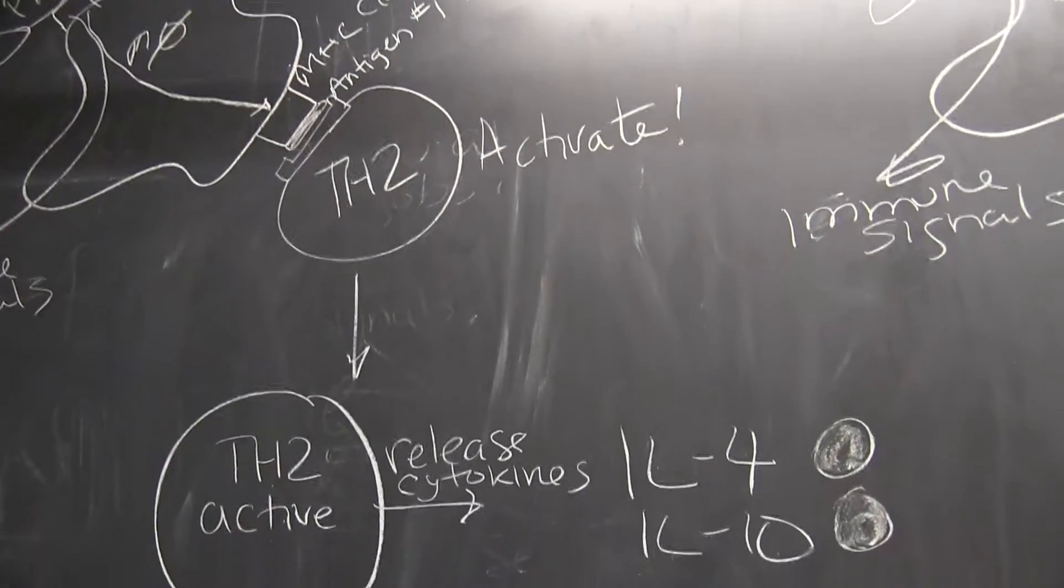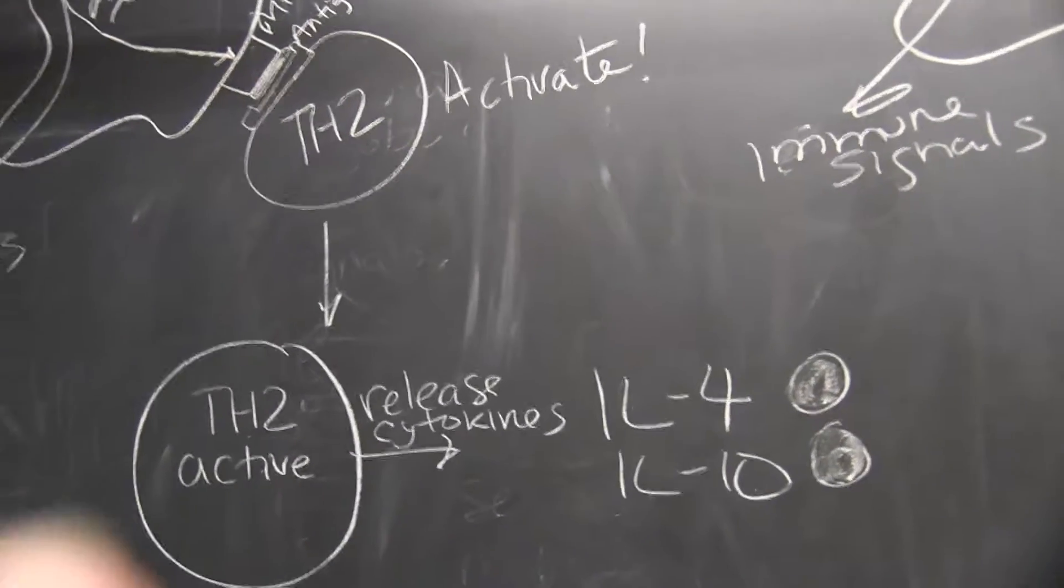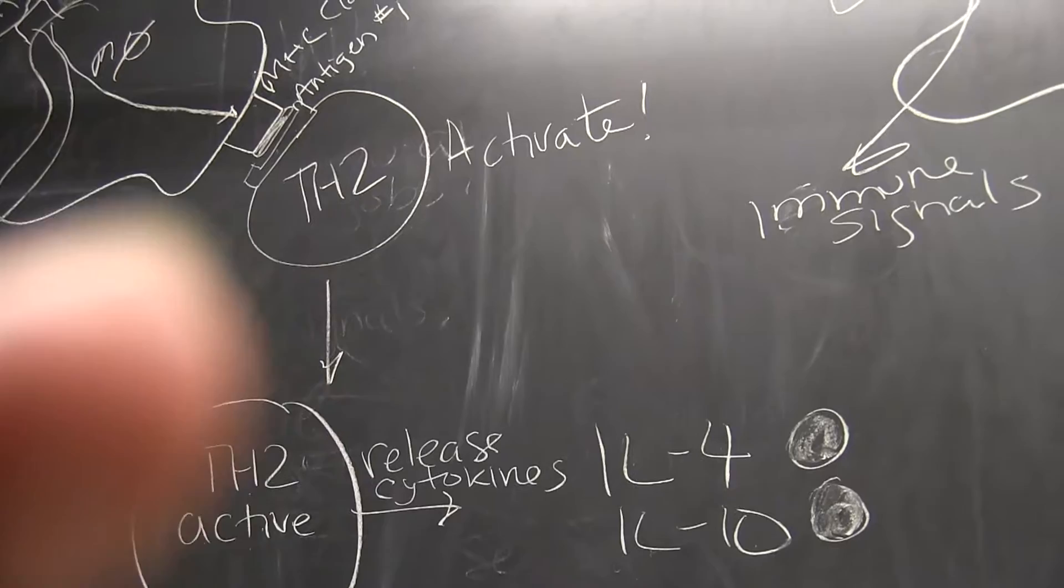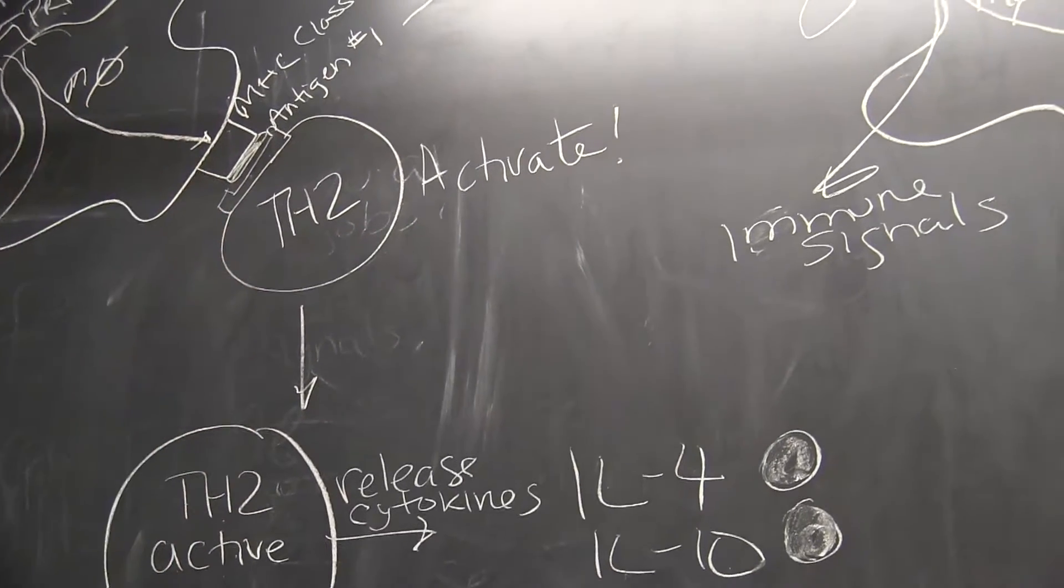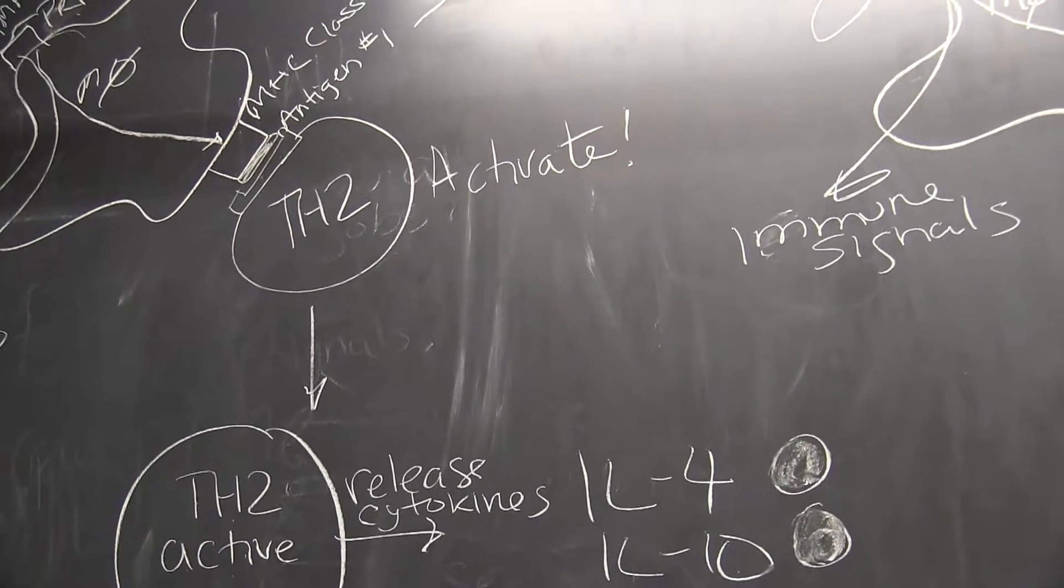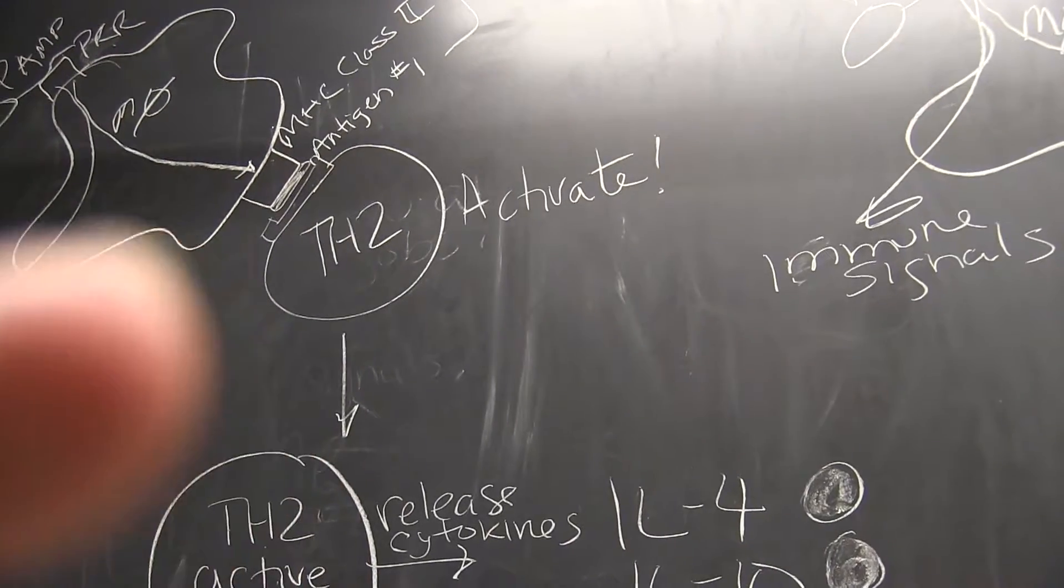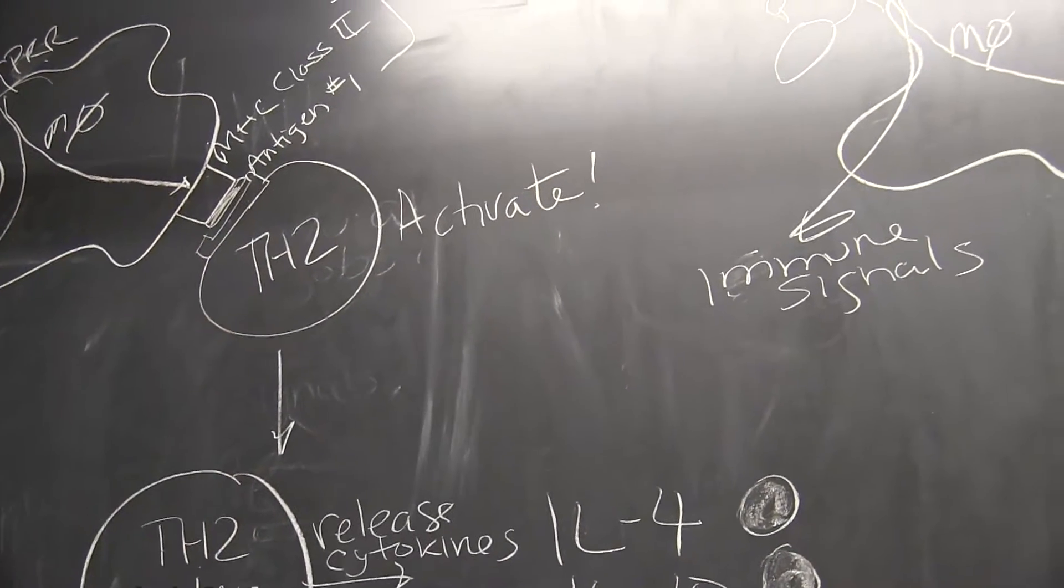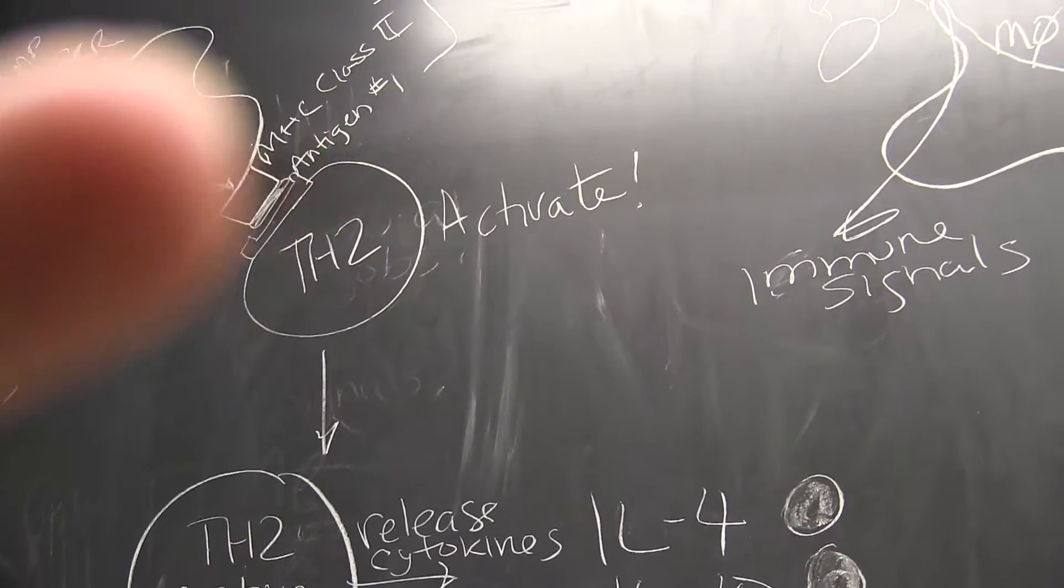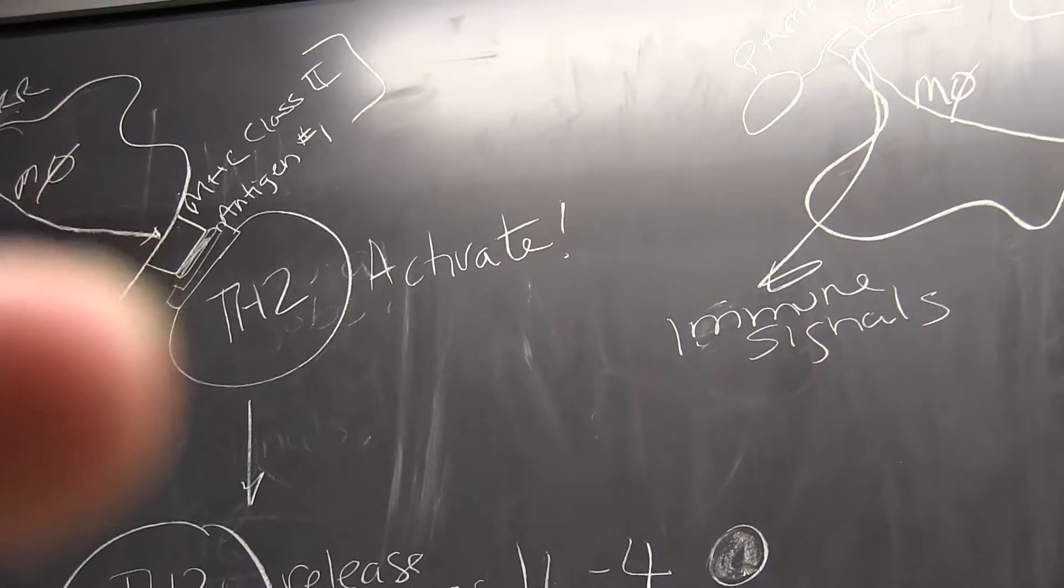At random, we have our helper T cell, and on the surface of the helper T cell is our T cell receptor. This T cell receptor is going to be specific for antigen number one plus MHC class two.